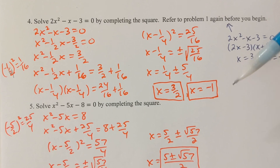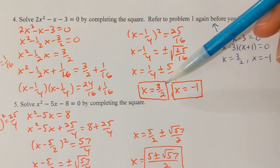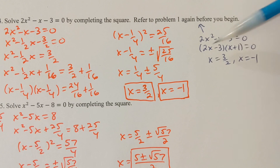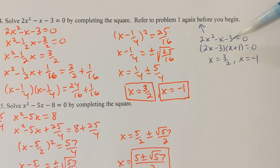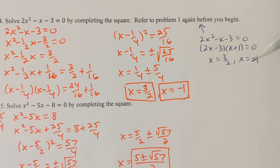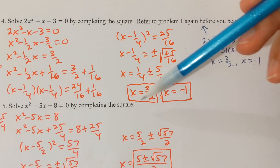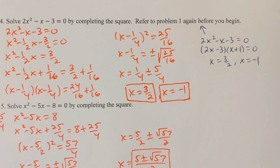So the two answers are x = 3/2 and x = -1. I already knew that because this equation factored from the get-go. This is how we'd get the answers by using the completing the square method.